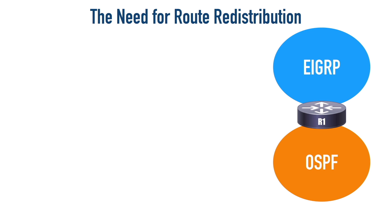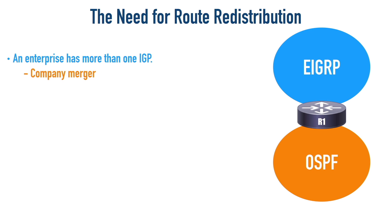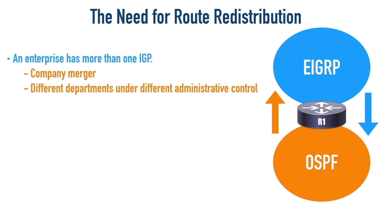Until we have one routing protocol to rule them all, there's a need to have multiple routing protocols peacefully coexist on the same network. Perhaps company A runs EIGRP, and company B runs OSPF, and the two companies merge. Until the newly combined IT staff agrees on a standard protocol to use — if they ever agree on one — the routes known to OSPF need to be advertised into EIGRP and vice versa. This kind of scenario is possible thanks to route redistribution, and that's the focus of this video. Other reasons we might need to perform route redistribution include having different parts of your network under different administrative control.